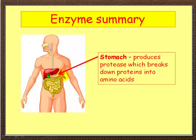Down in the stomach, we've got protease being produced, and this breaks down proteins into amino acids. Interestingly, protease is very pH specific — the stomach also produces acid, making it quite acidic, and those are the optimum conditions for protease action.